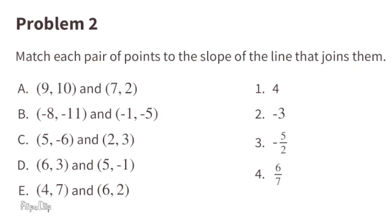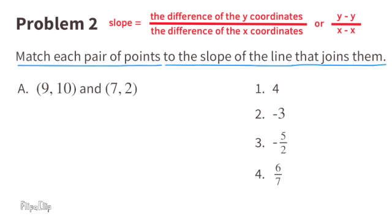Problem number 2. Match each pair of points to the slope of the line that joins them. We have to remember that the slope equals the difference of the y coordinates over the difference of the x coordinates, or y minus y over x minus x. Remember, this could be y2 minus y1 over x2 minus x1, or y1 minus y2 over x1 minus x2.